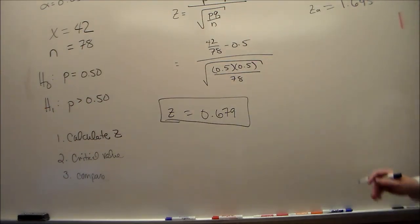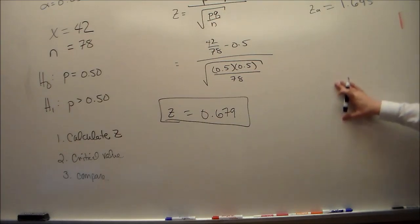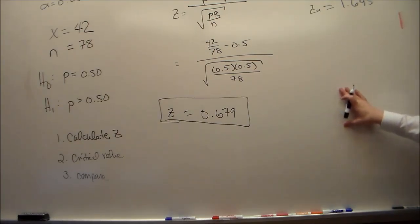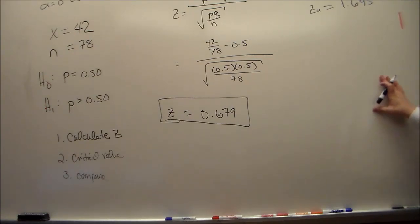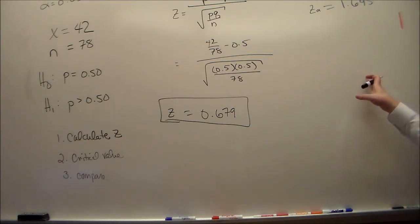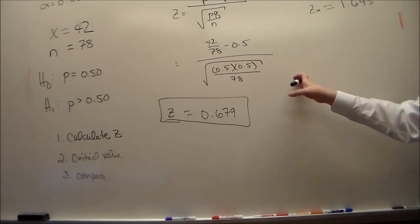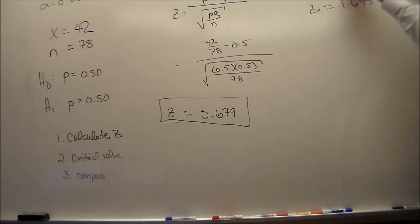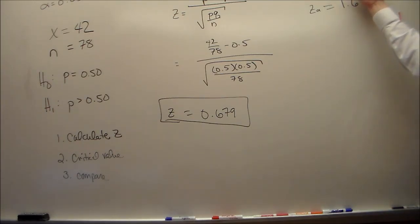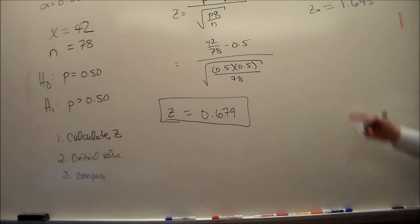For a two-tailed test, you'd have both a negative and a positive critical value. So critical value: alpha is 0.05, so we go to our table. We look for the value of z of alpha, 1.645. In our table, the body of the table, we'll look for 0.05, because that 0.05 is a probability and in the z-table that probability is in the body of the table. We'll find that it's actually exactly between two values, so the z value will be the average of those two. Finding the critical value, that's 1.645.